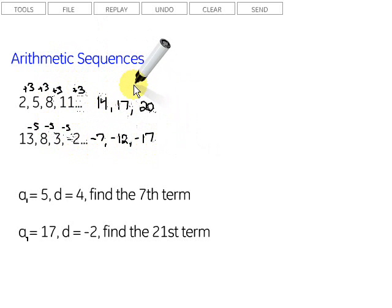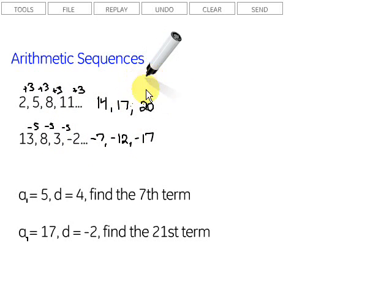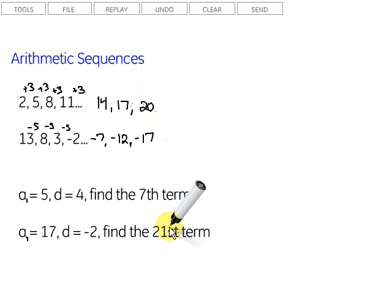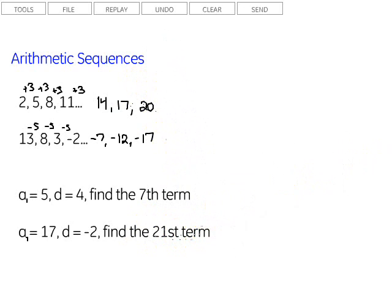But sometimes it's going to ask us for terms that would take a long time to reach one by one — for example, the 21st term. That would take quite a while. Instead, we can use a formula to figure out what that term would be.